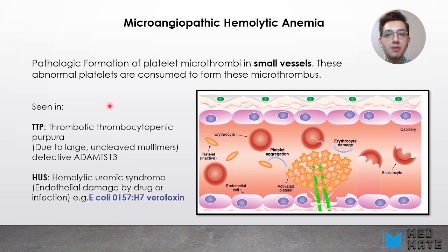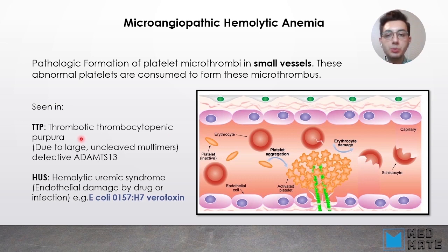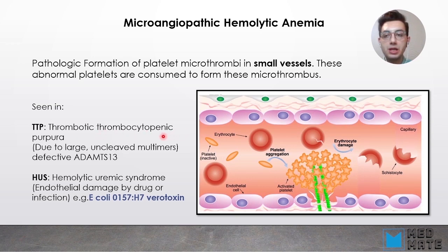There are two forms of microangiopathic hemolytic anemia. The first is TTP — thrombotic thrombocytopenic purpura. When forming these thrombi, platelets are consumed, reducing circulating platelets, which causes thrombocytopenia and leads to bleeding in the skin — purpura.